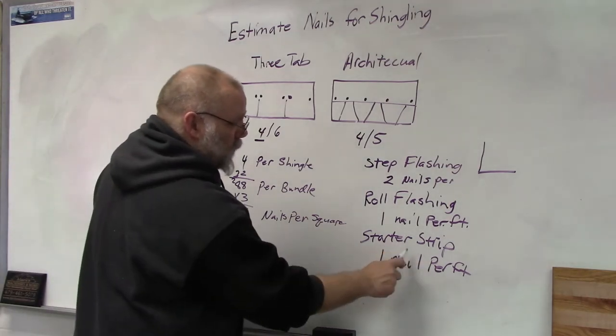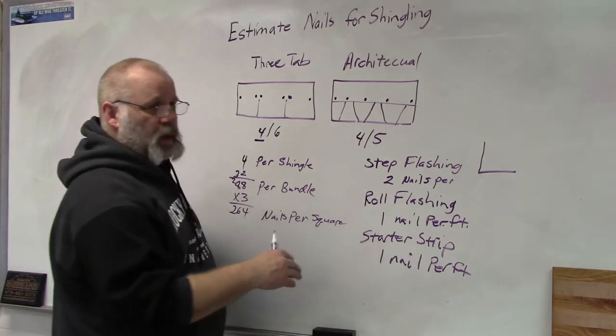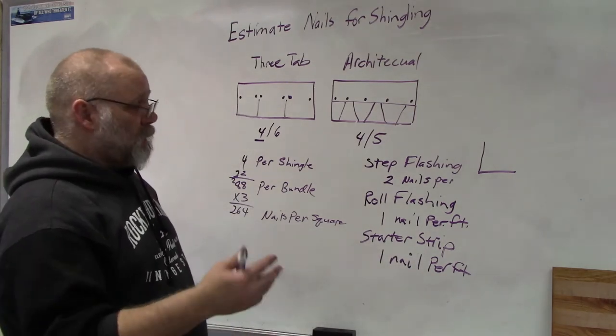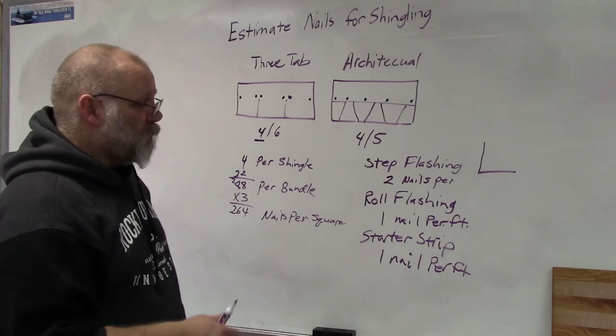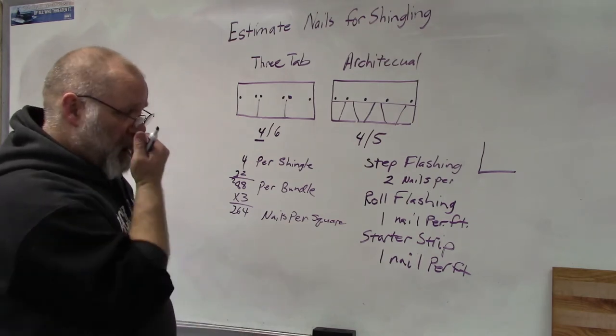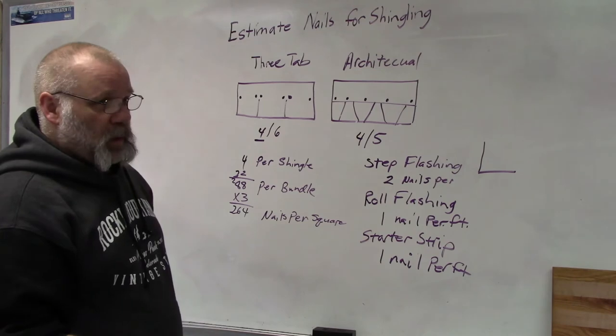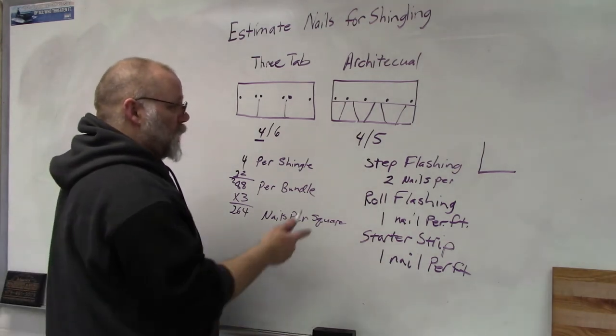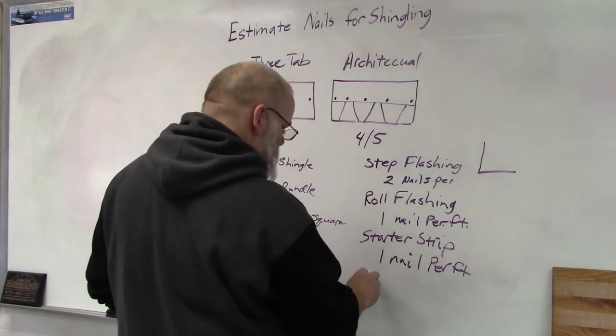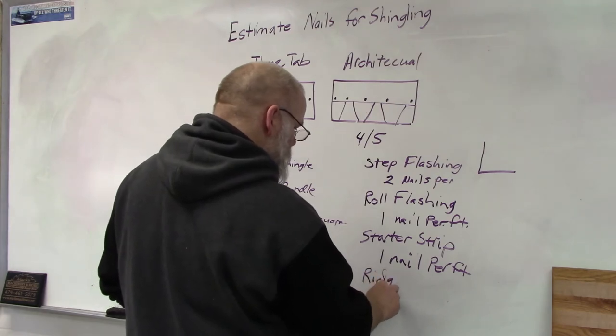Again, as we talked in other videos, you're going to add for waste, so you're going to add 10 or 15 or 20 percent for waste so you always have enough nails. You never want to be too short. Okay, and another one would be your ridge cap.